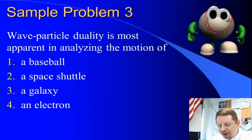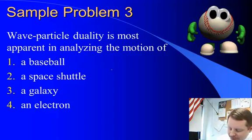Sample problem three, the wave particle duality is most apparent in analyzing the motion of a baseball, a space shuttle, a galaxy, or an electron. Well, if you look at the de Broglie wavelength, lambda equals h over p,